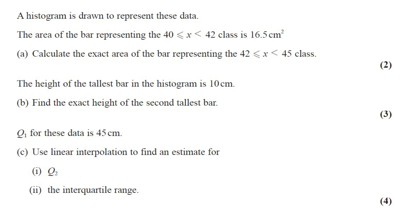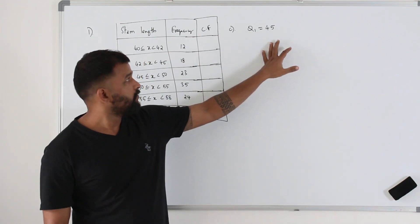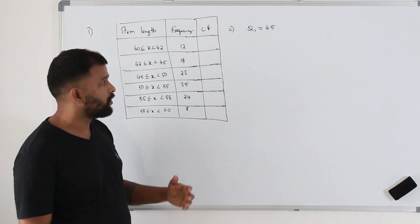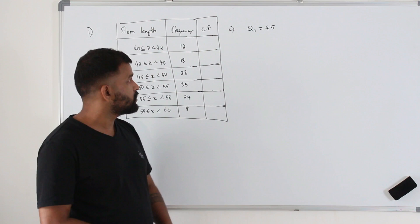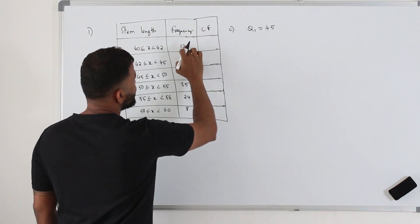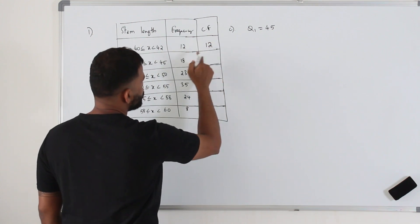Q1 for this data is 45 centimeters. Part C: Use linear interpolation to find an estimate for Q2 and interquartile range. This question got 4 marks. So we have the Q1 lower quartile. We need to find Q2 median and Q3 upper quartile, and then find the interquartile range. To find Q2 and Q3, you need cumulative frequency first. Take the frequency and write it here, and then just add the next frequency.